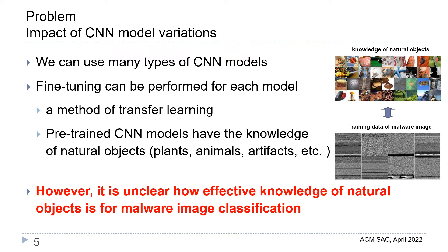In this slide, we state the problem regarding the impact of CNN model variations. We can use many types of CNN models, and fine-tuning can be performed for each model. Fine-tuning is a method of transfer learning. Pre-trained CNN models have knowledge of natural objects such as plants, animals, and artifacts. However, it is unclear how effective this knowledge of natural objects is for malware image classification.